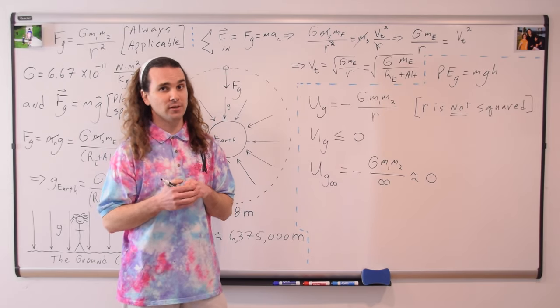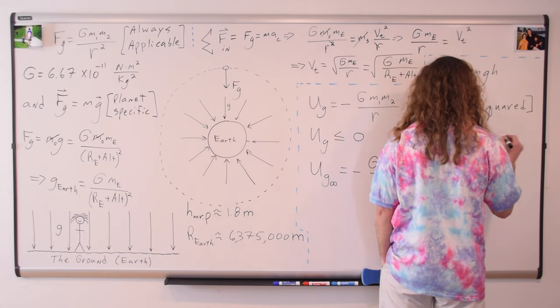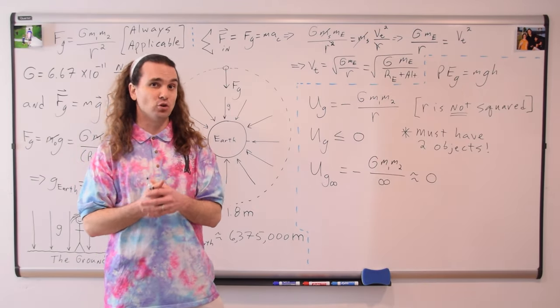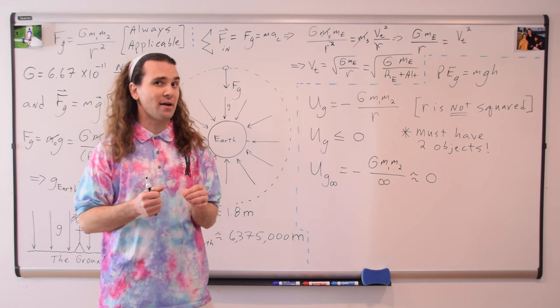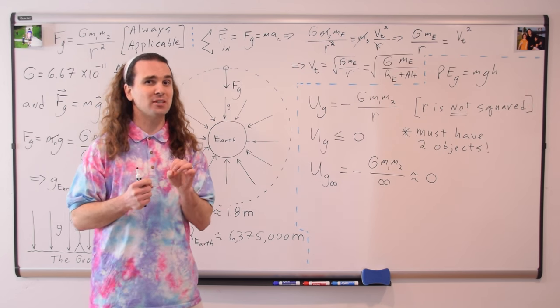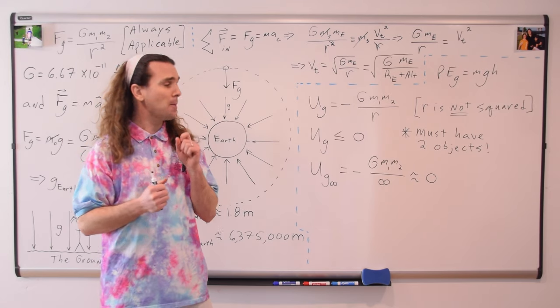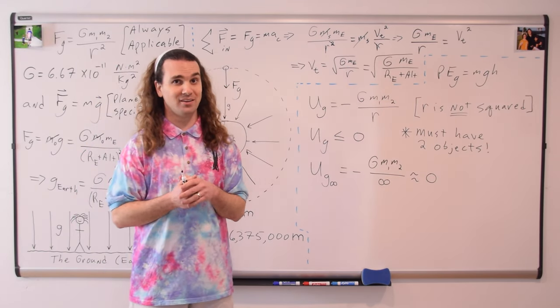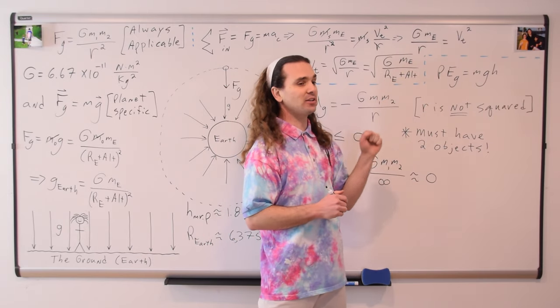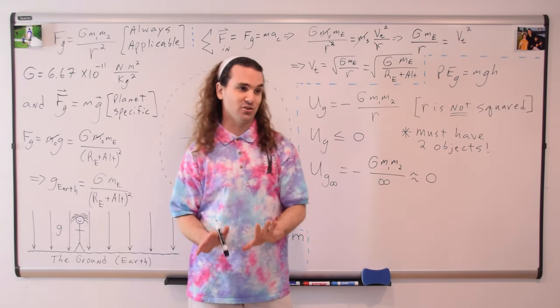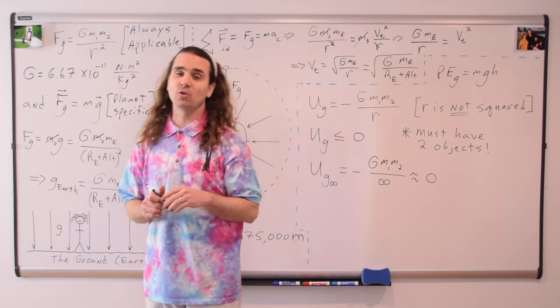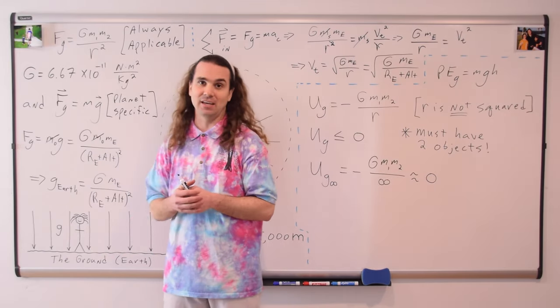A single object cannot have universal gravitational potential energy. Universal gravitational potential energy is defined as the gravitational potential energy that exists between two objects — mass one and mass two. A student asked: what about the regular gravitational potential energy equation, mass times little g times height — that only has one mass in it. That equation represents the gravitational potential energy that exists between the object and planet Earth, so there are still two objects involved.